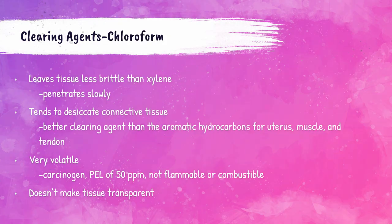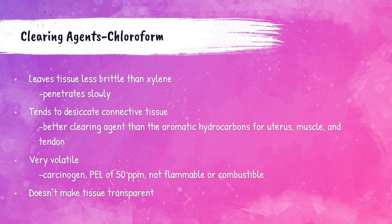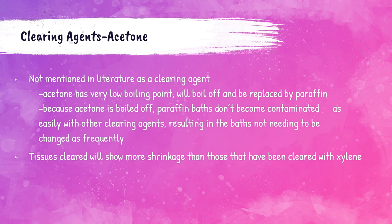Chloroform penetrates tissue much more slowly and leaves it less brittle than xylene. It desiccates connective tissues but is a good clearing agent for muscle, uterine tissue, and tendon. It vaporizes easily and must be used in closed containers. Importantly, chloroform does not leave the tissue transparent, it is not flammable or combustible, but it is a carcinogen; when heated it can produce a toxic gas. OSHA's PEL for chloroform is 50 parts per million. Acetone can also be used as a clearing agent — it has a very low boiling point so it can be boiled off and replaced by paraffin, meaning the paraffin baths don't become contaminated as easily. It does create more tissue shrinkage than xylene.